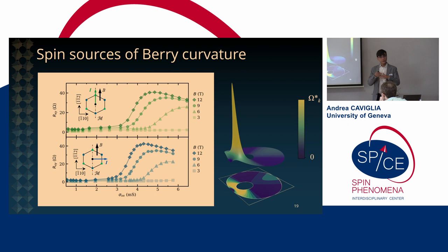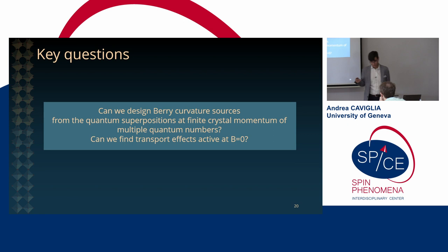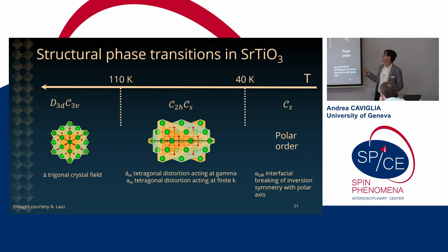All right. So this has to do with the superposition of spin quantum numbers. What about the orbital degrees of freedom? And more importantly is there any effects related to that that can be detectable at B equals zero? So in time-reversal symmetric conditions. And so in order to look at this we need to think a little bit about the structural phase transition that are present in strontium titanate which are a little bit complex and let me walk you through that. So when we are sitting at the 1-1-1 surface of strontium titanate